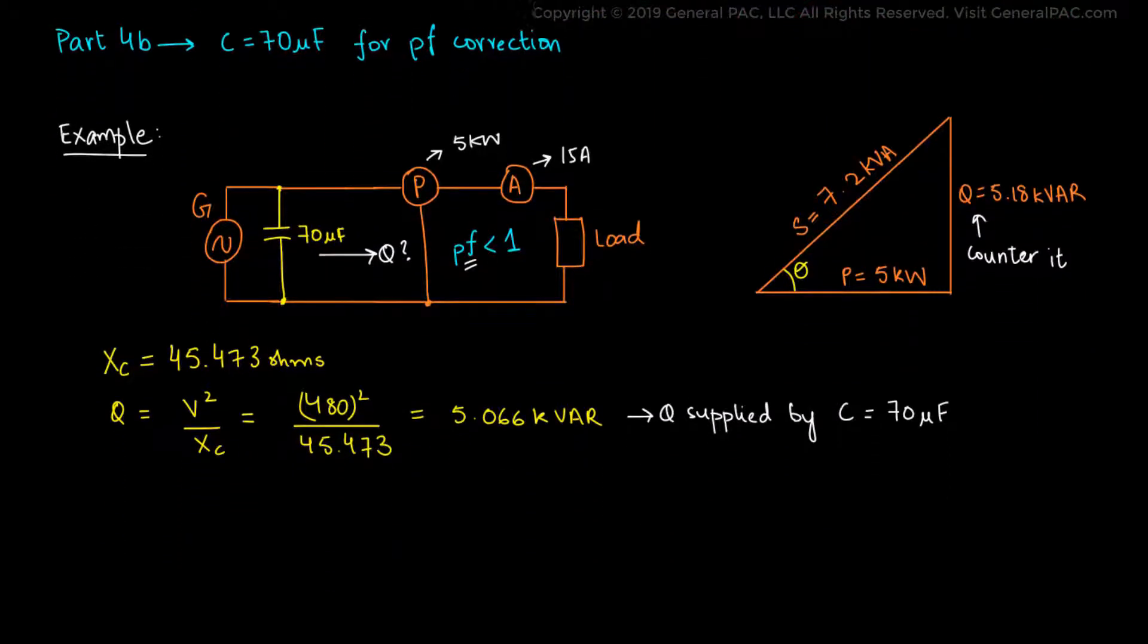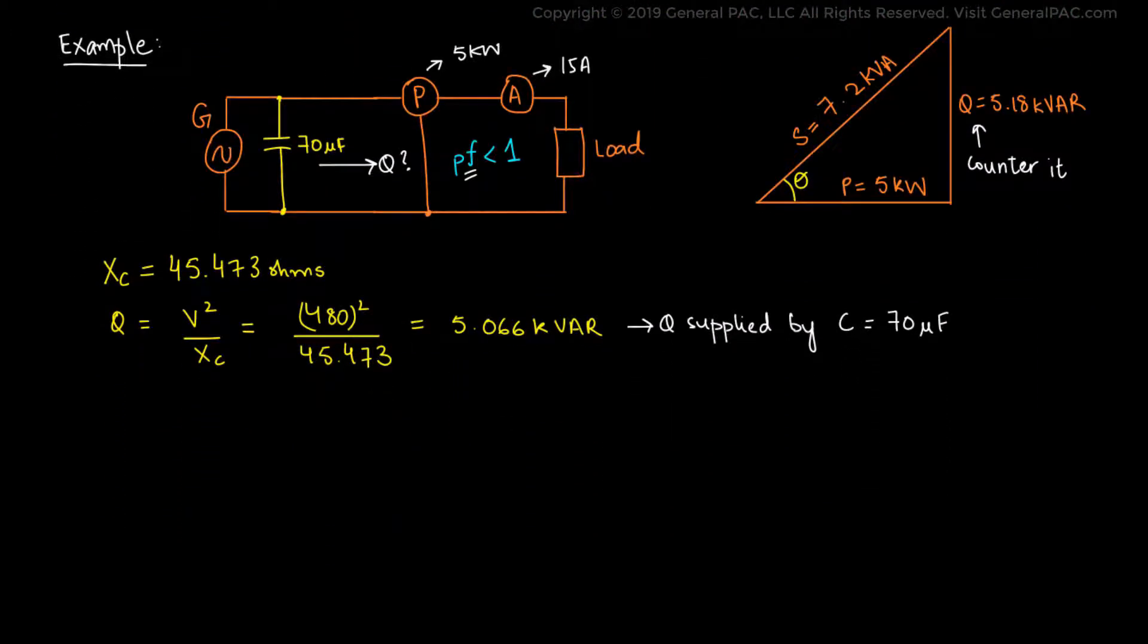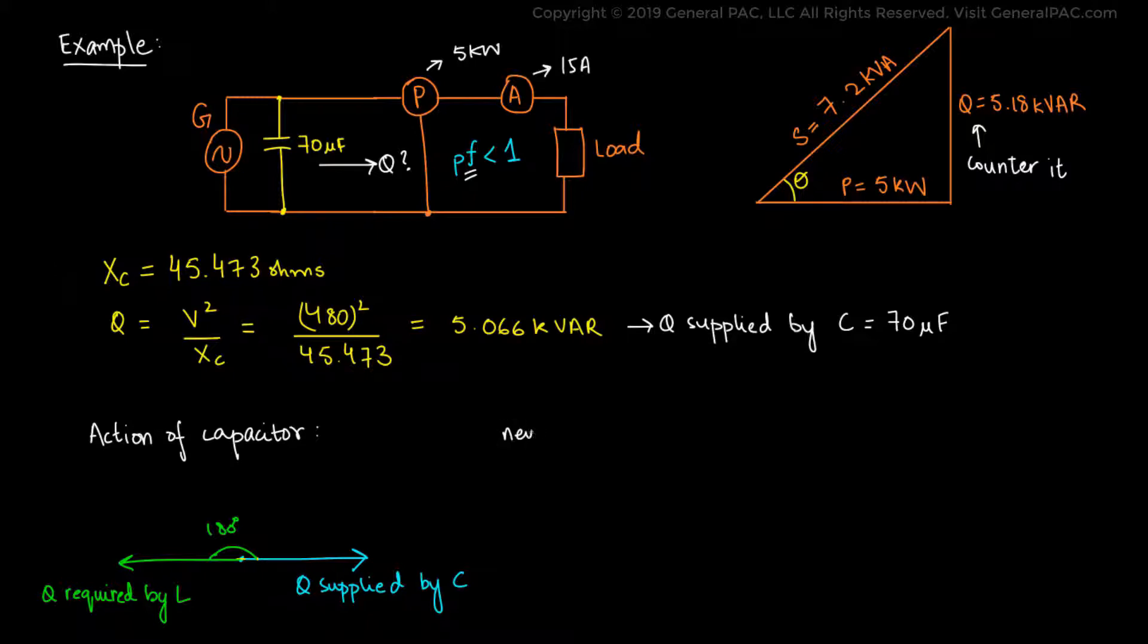Recalling the operating mechanism of the capacitor, we can see that the phase angle of the reactive power supplied by the capacitor will be 180 degrees out of phase from the reactive power required by the inductive load. And that's the really important part. Therefore, it will be directly opposing its effect. Mathematically, we can subtract both quantities to get the reactive power of the system. So the reactive power is equal to 5.18 kVAR minus 5.066 kVAR, and that equals 0.114 kVAR.